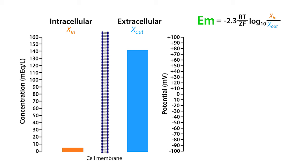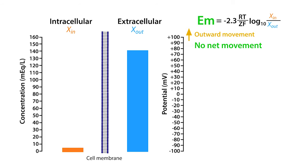To the right of the potential axis, we have a green arrow which points to the equilibrium potential that corresponds to that scene in the Nernst equation, and it represents the electrical potential where there is no net movement of ions in or out of the cell. The yellow arrow, which sits above the equilibrium potential, represents the potential at which ions will move out of the cell. The purple arrow, which sits below the equilibrium potential, represents the potential at which ions will move into the cell.